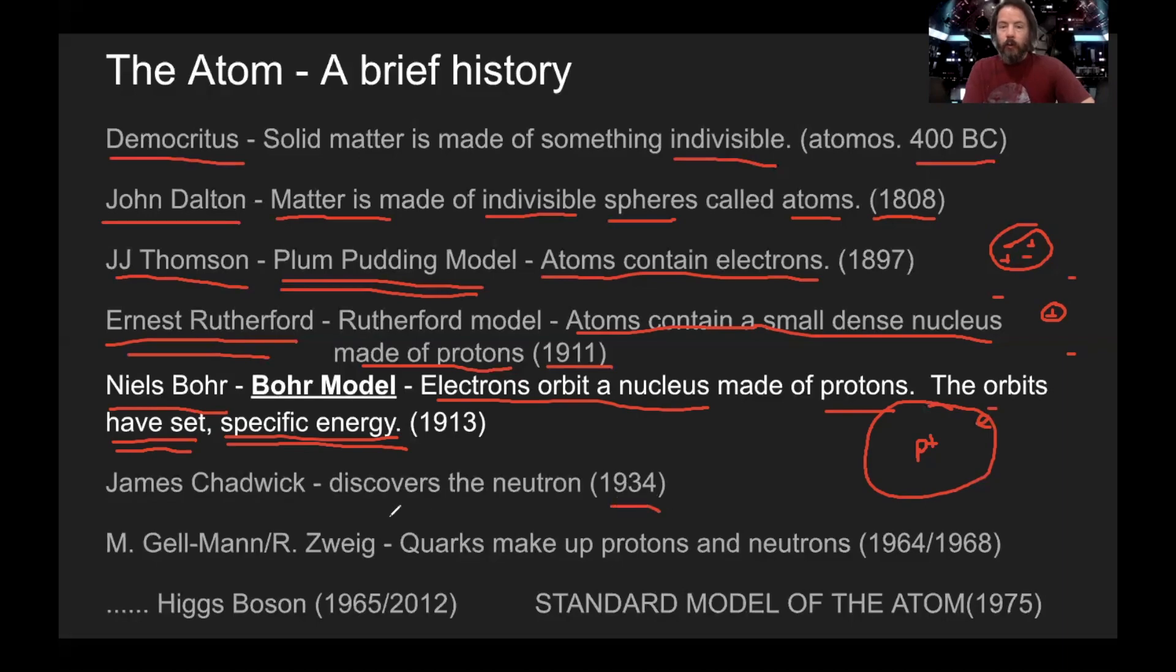In 1934, James Chadwick discovers the neutron. He says there's something else in the nucleus that has no charge. And he discovered that in 1934.